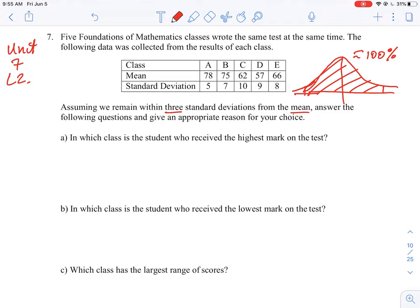So the first question says, in which class is the student who received the highest mark on the test? So how do we know who would have the highest mark on the test? We know that the standard deviation, if we went three standard deviations, we would capture all the data. So the way we need to look at this is we take a look at class A and we know that the mean score in this class is 78.